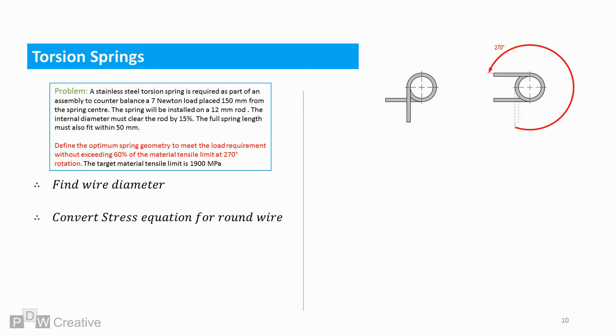There are different stress equations for different shaped wires. Let's take the equation for round wire and rework to find the diameter. Stress equals 32 times torque over π times wire diameter to the power of 3. A quick rework gives the diameter.